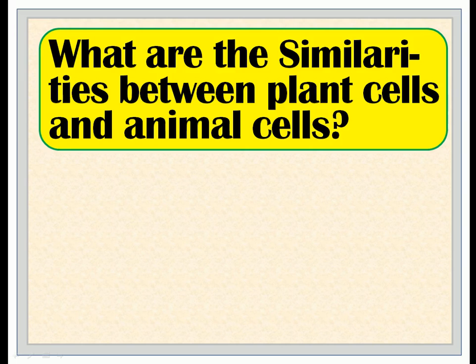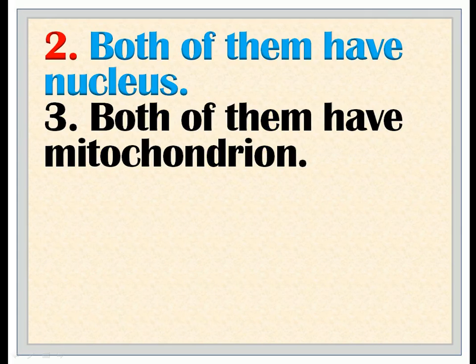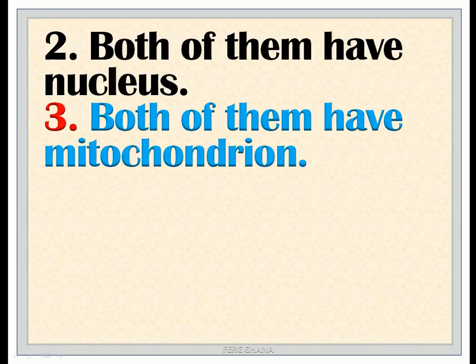What are the similarities between plant cells and animal cells? The similarities between plant cells and animal cells are: 1. Both of them have a membrane. 2. Both of them have a nucleus. 3. Both of them have mitochondria.